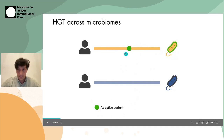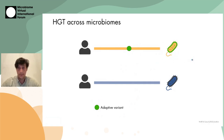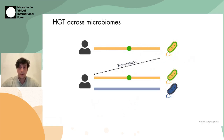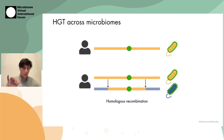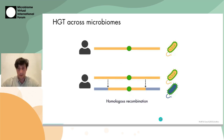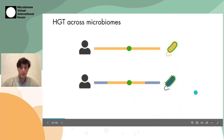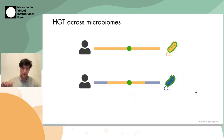We have an adaptive variant shown in green. When we have adaptive horizontal gene transfer, the first step is some kind of transmission event — say, a strain transmitting between two hosts. Subsequently, we can have some kind of recombination, such as homologous recombination, where a genetic section is essentially copied from one strain to the other. As a result, we now have a new strain that bears the adaptive variant.